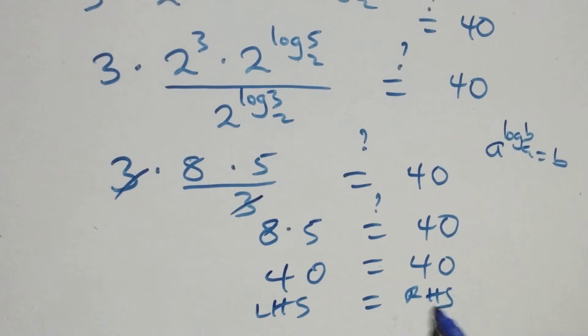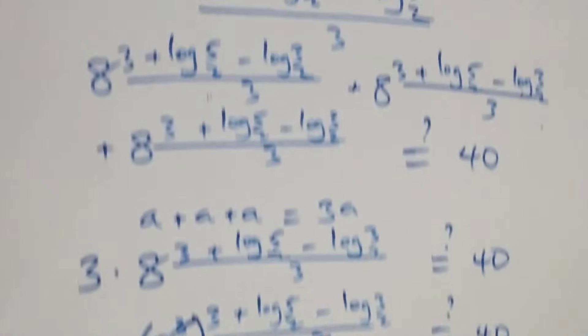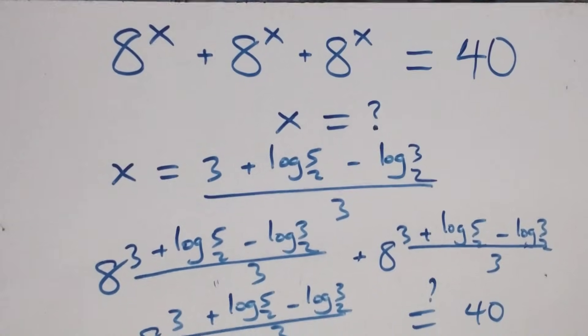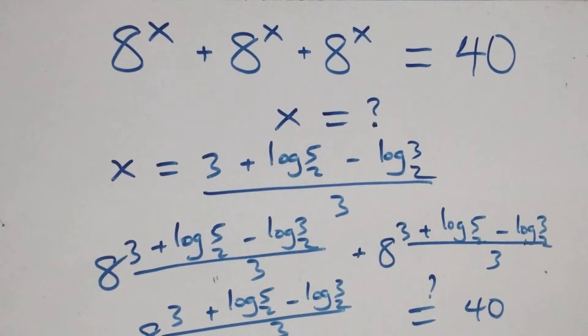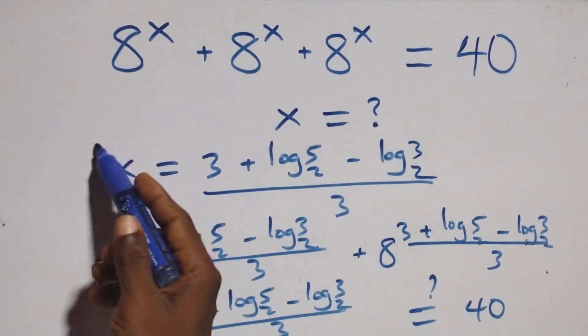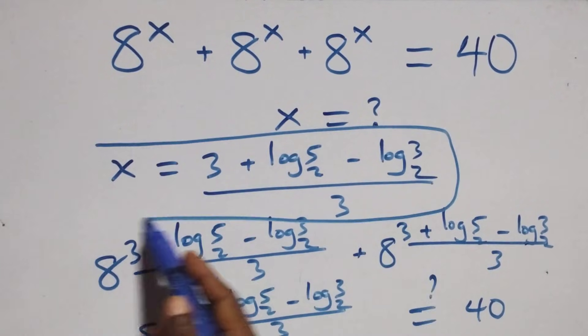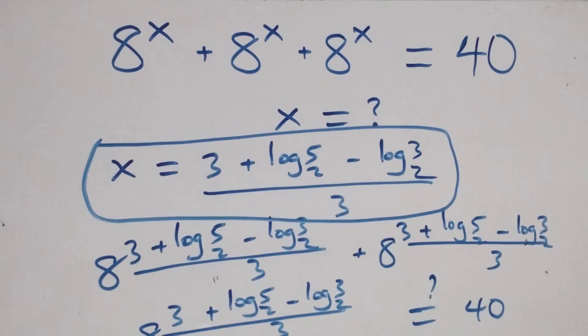Therefore, we conclude that x equals (3 + log₂(5) − log₂(3)) over 3. That is the solution to this given problem.